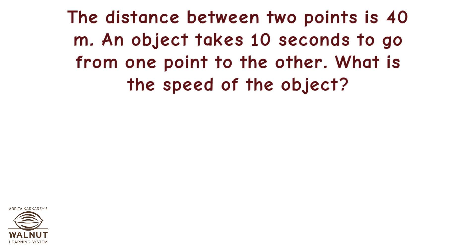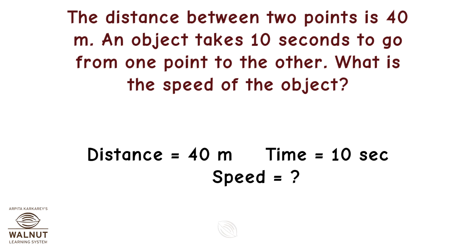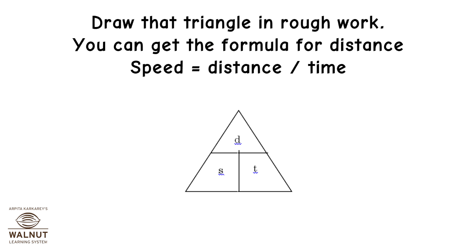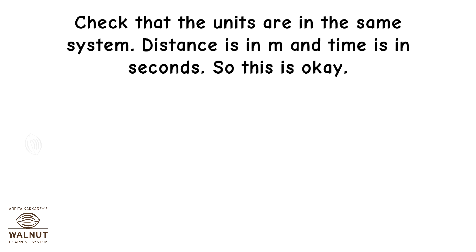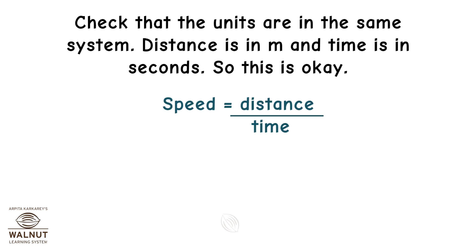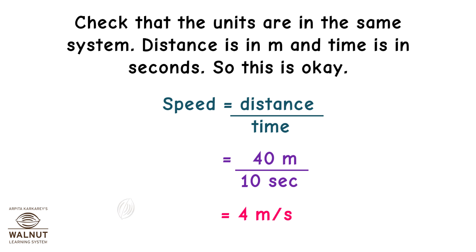The distance between two points is 40 m. An object takes 10 seconds to go from one point to the other. What is the speed of the object? Distance = 40 m, Time = 10 seconds, Speed = unknown. Speed = distance ÷ time. Distance is in meters and time is in seconds, so the units are compatible. Speed = 40 m ÷ 10 s = 4 meters per second.